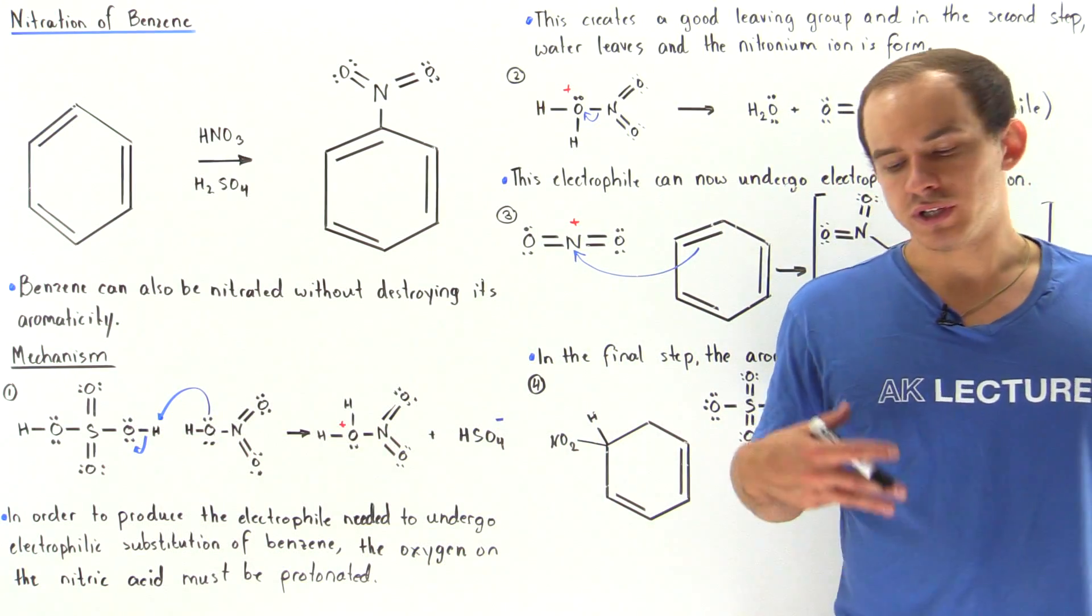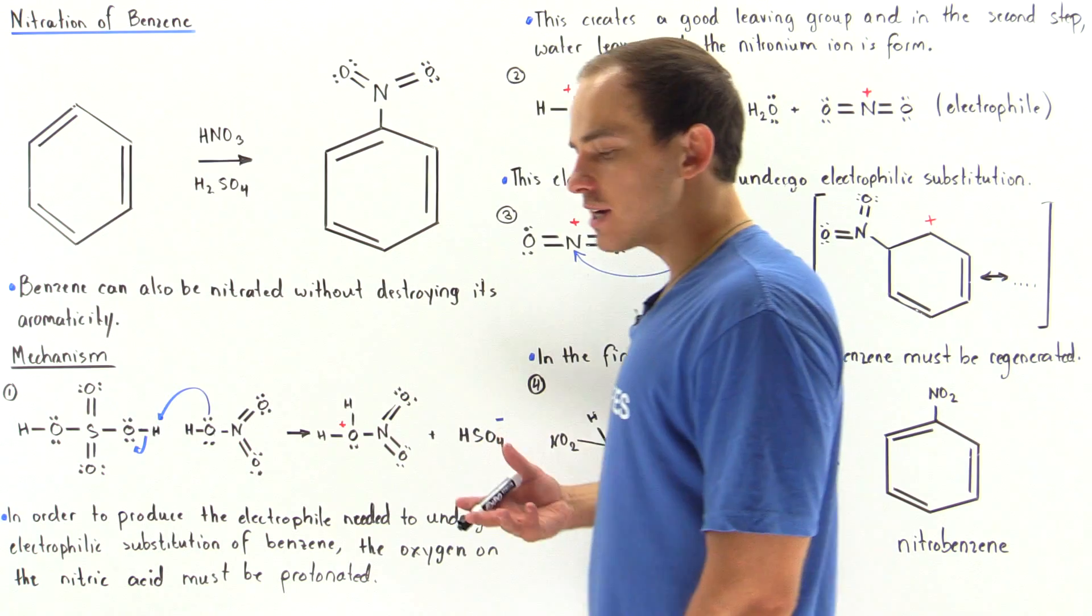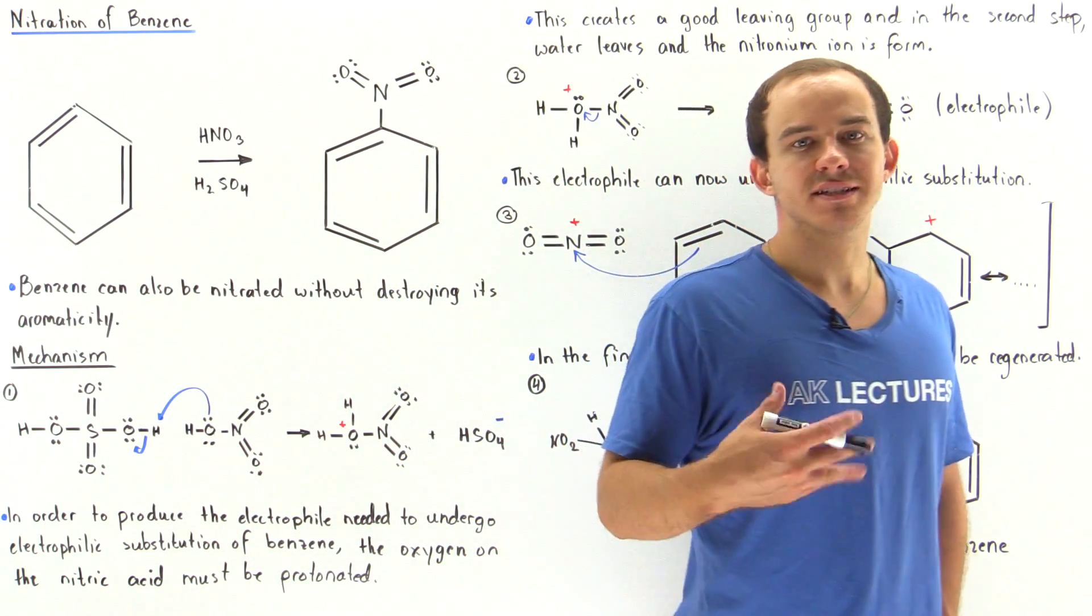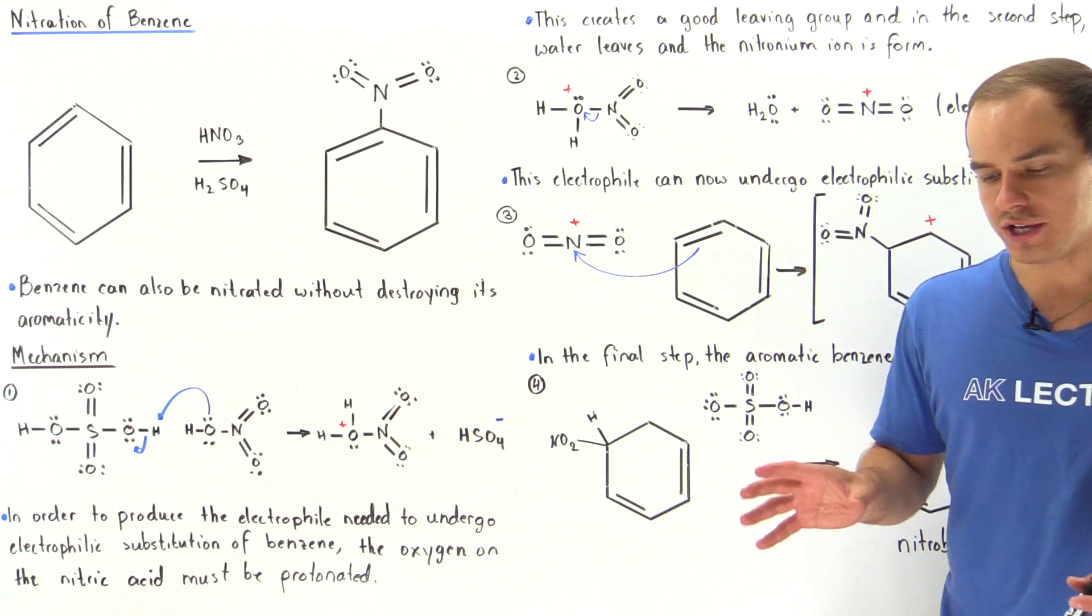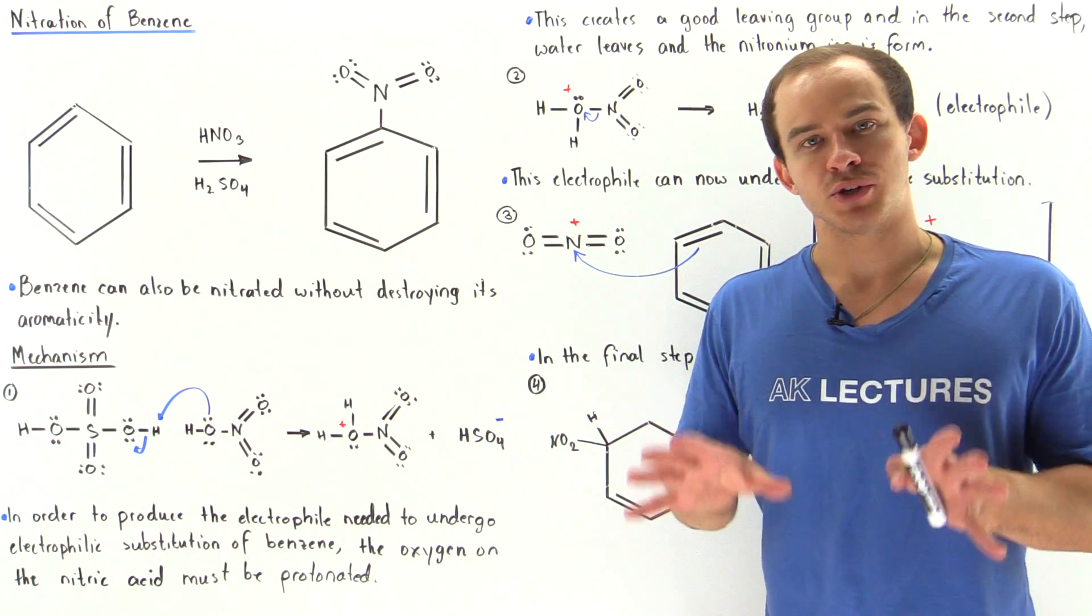Previously we saw that we can take benzene, mix it with sulfur trioxide in the presence of sulfuric acid and undergo a sulfonation reaction in which the aromaticity of the benzene ring is still preserved.